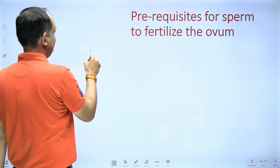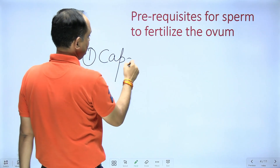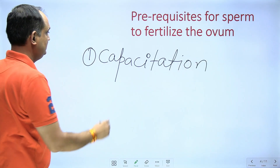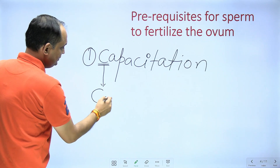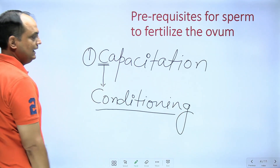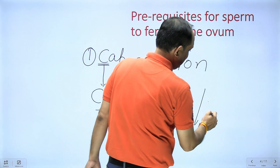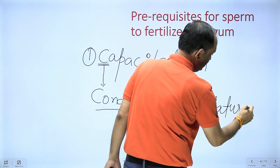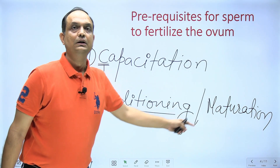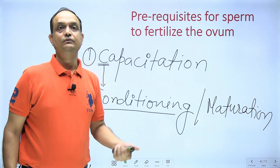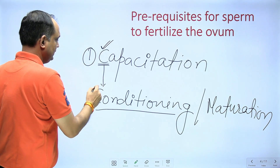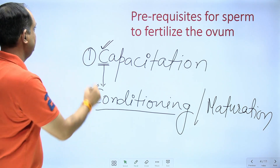After that priming, the spermatozoa will achieve the capability to fertilize the ova. The first process is known as capacitation. Capacitation is the conditioning — also known as maturation — of your spermatozoa. By this conditioning or maturation, the spermatozoa achieves the ability to fertilize.